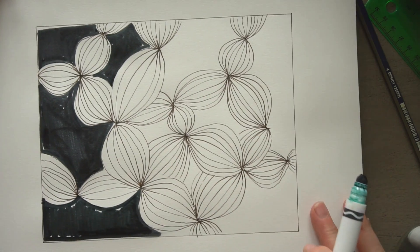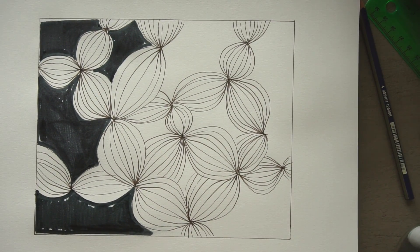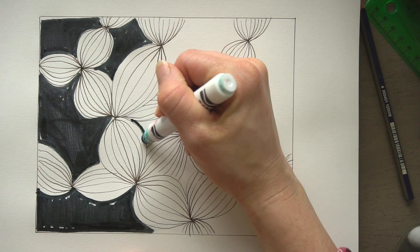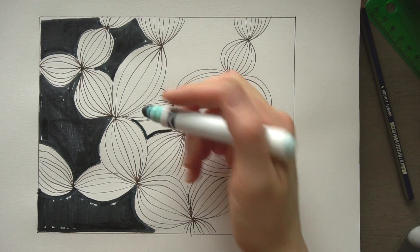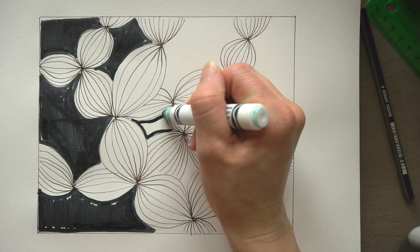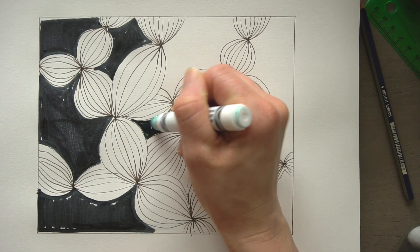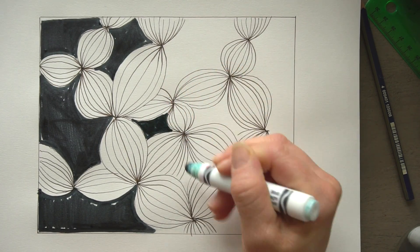I actually kind of like it without the black. So maybe I should have left it. But at least you can kind of see what it looks like with that. Would have been better to shade it in probably with a marker.